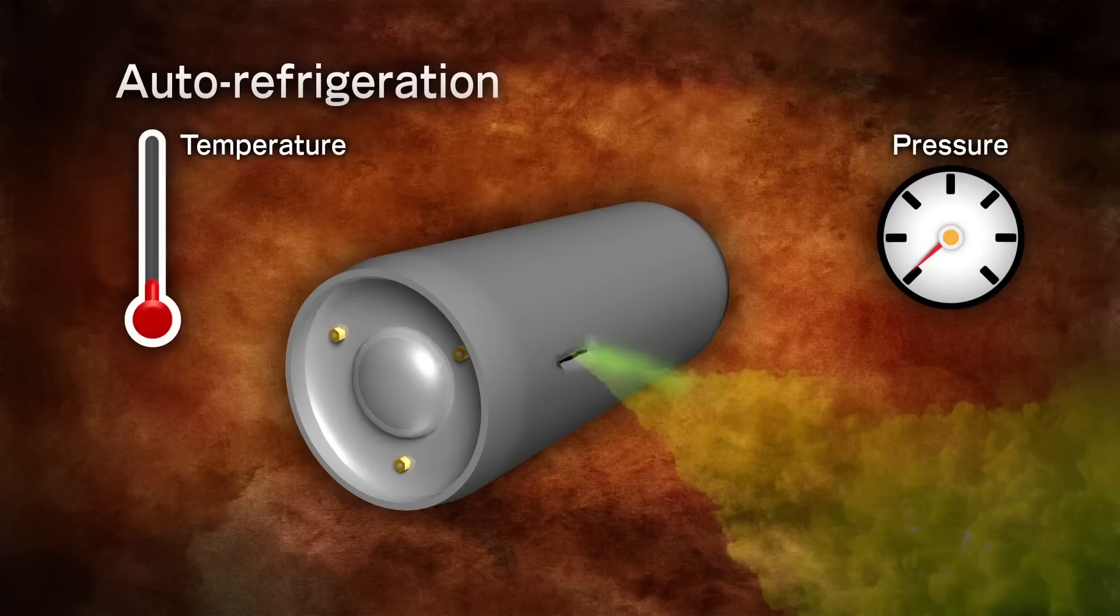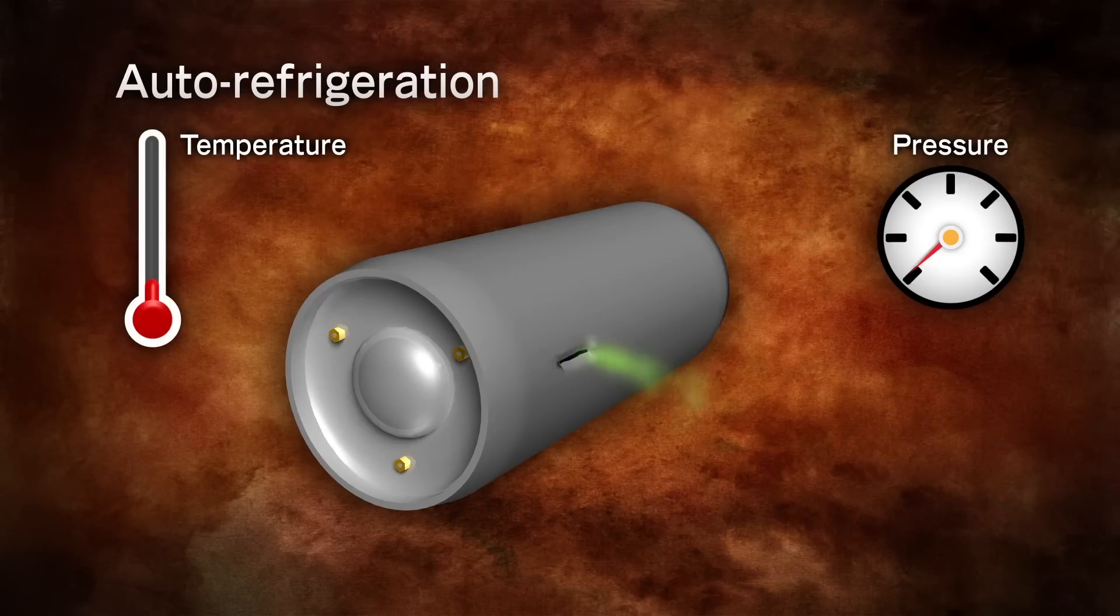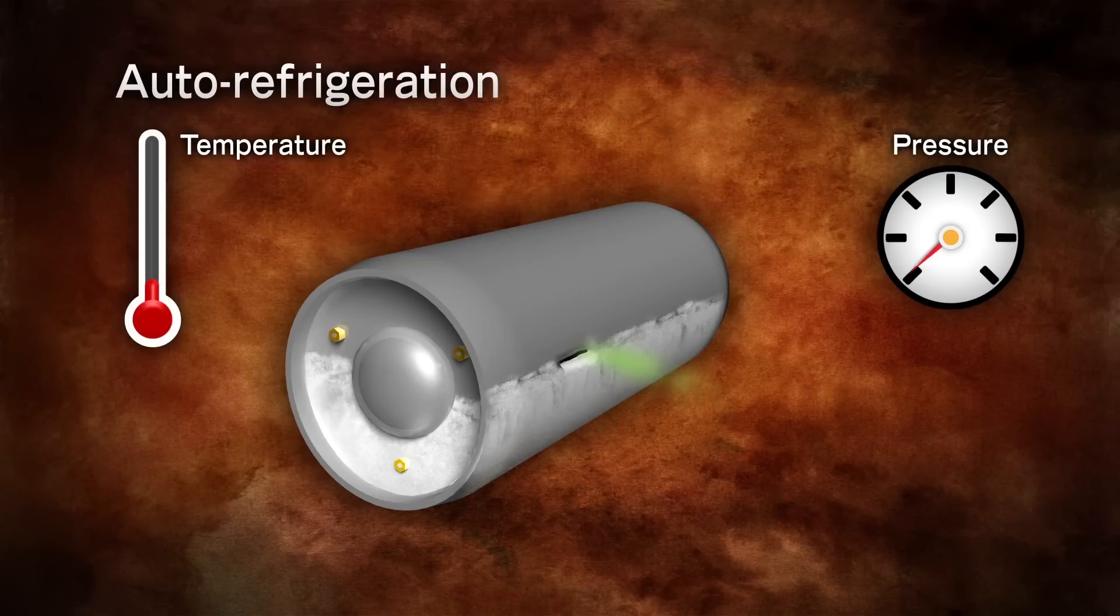It becomes colder because it is no longer under pressure from being in an enclosed container. Because the chlorine remaining in the container is so cold, a visible frost layer will form on the outside of the container at the liquid line, which is typically the level of the puncture.